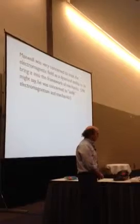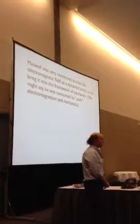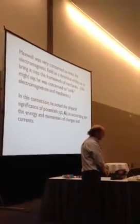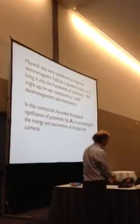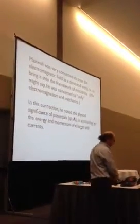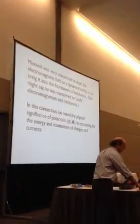Maxwell, from the very beginning, was very concerned to treat the electromagnetic field as a dynamical entity—that is, to bring it into the framework of mechanics. We might say that not only was he concerned to unify electricity and magnetism, and then optics, but he wanted the whole thing also to fit together with mechanics. In this connection, he noticed and emphasized the physical significance of those potentials, phi and A, in accounting for the energy and momentum of electromagnetic fields interacting with charges and currents.